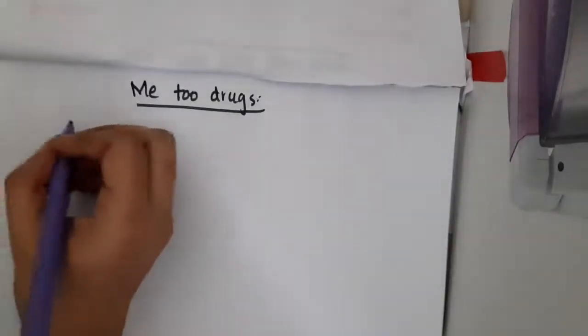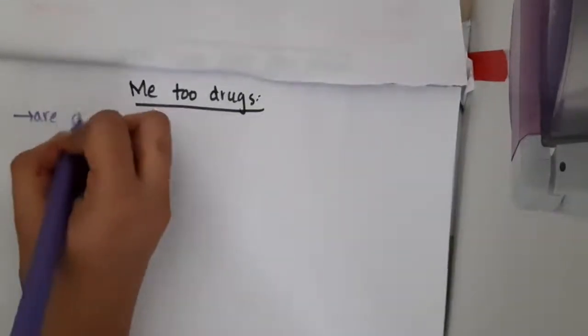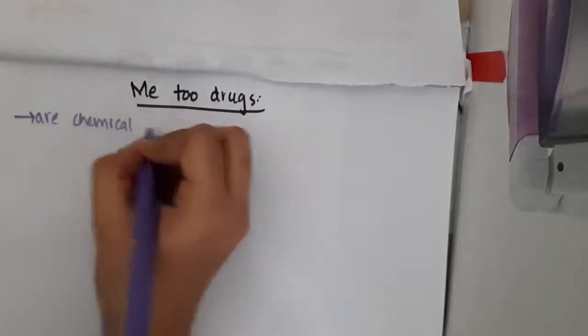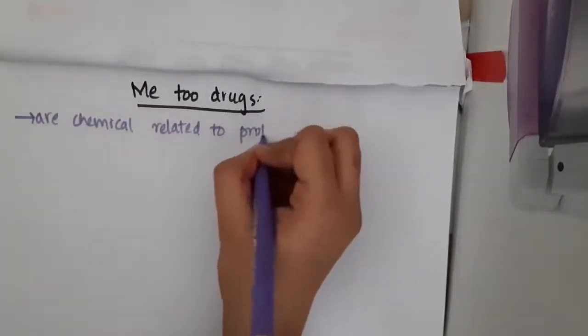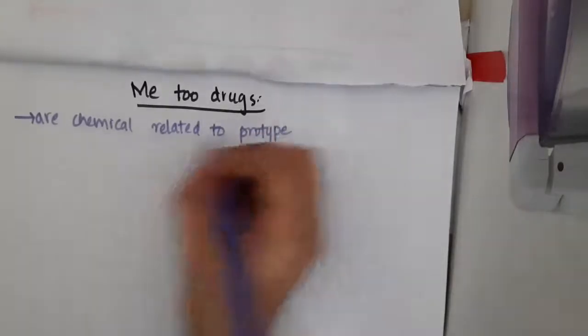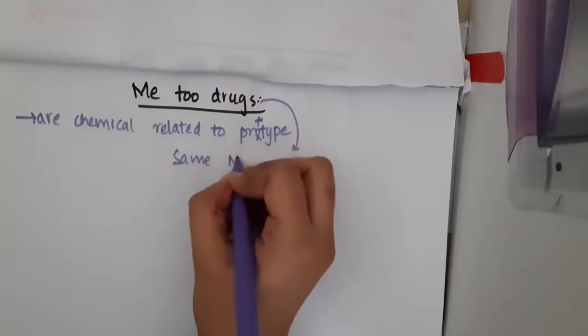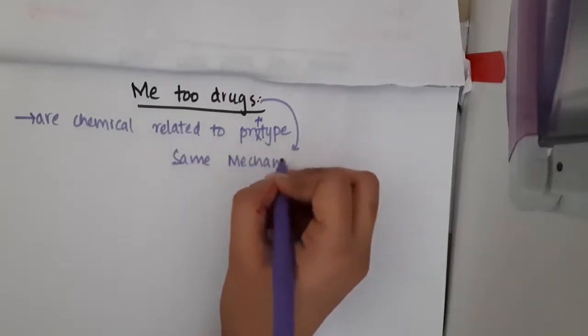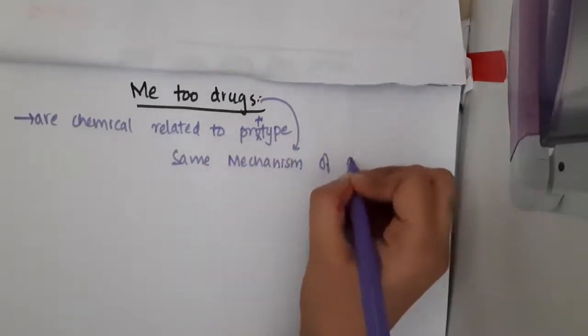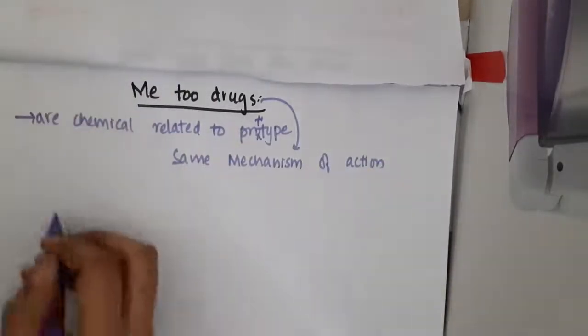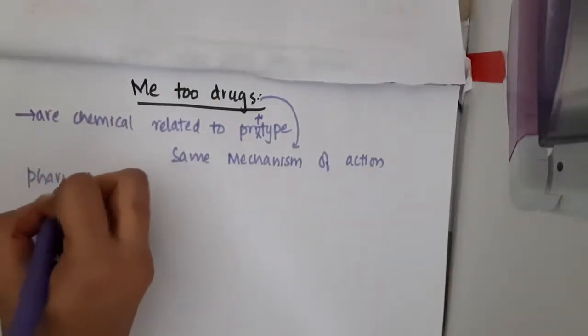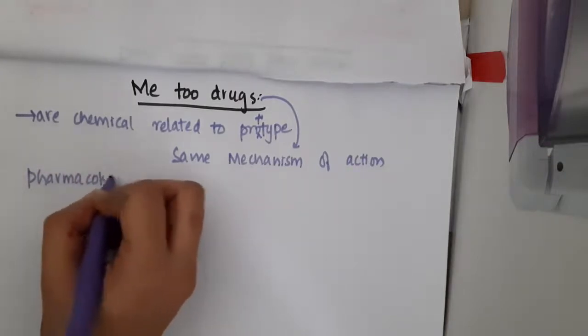What are Me Too Drugs? Me Too Drugs are drugs which are chemically related to a prototype and have the same mechanism of action. They have the same mechanism of action, but the pharmacokinetics may vary between them.